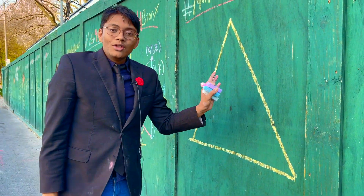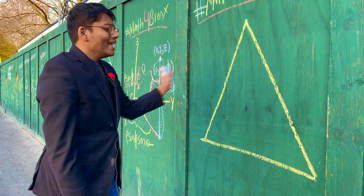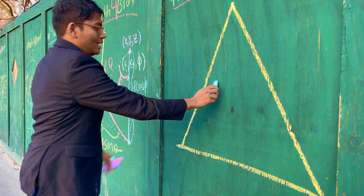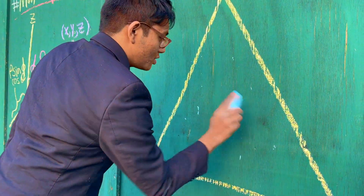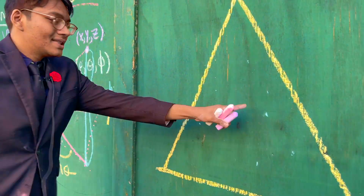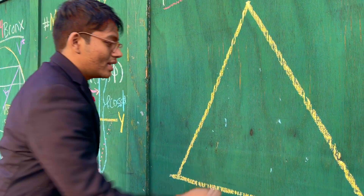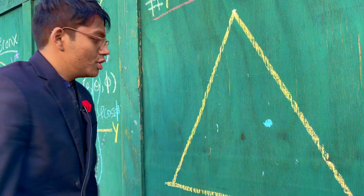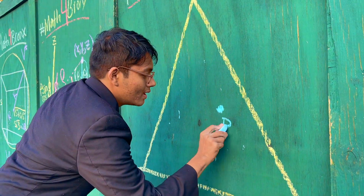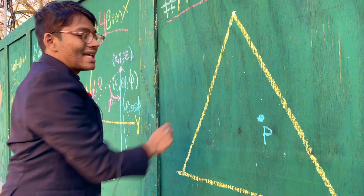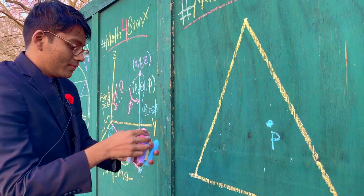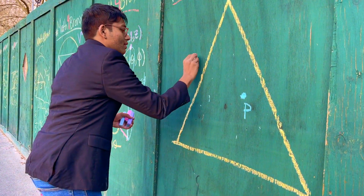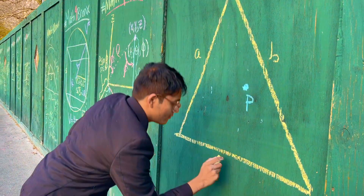Now, you can put a dot anywhere inside this triangle. Let's put a dot anywhere in this triangle — let's put a dot right there. Now, I'm going to construct three altitudes from this dot P to each side of the triangle. We're going to call the three sides of the triangle A, B, and C.